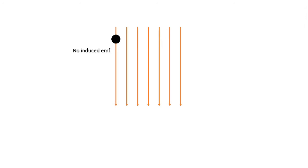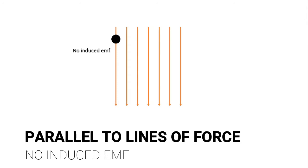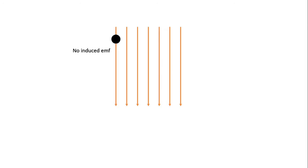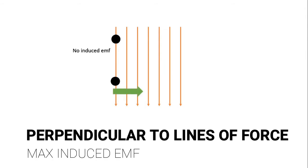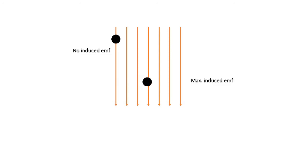Hence there is no induced EMF in this conductor. So we can say that when a conductor is moving parallel to the magnetic lines of force, there is no induced EMF. Now, when we move another conductor horizontally, the change of flux is maximum, as you can see from the display, and the induced EMF is also maximum.